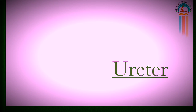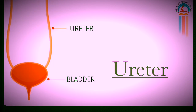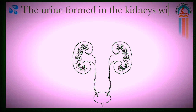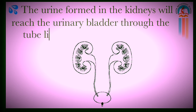Next we will see about the ureter. The ureter is a tube-like structure which is connected with the kidneys to the urinary bladder. Can you see the tube-like structure which connects the kidney and the urinary bladder? The urine formed in the kidneys will reach the urinary bladder through this tube-like structure called the ureter.